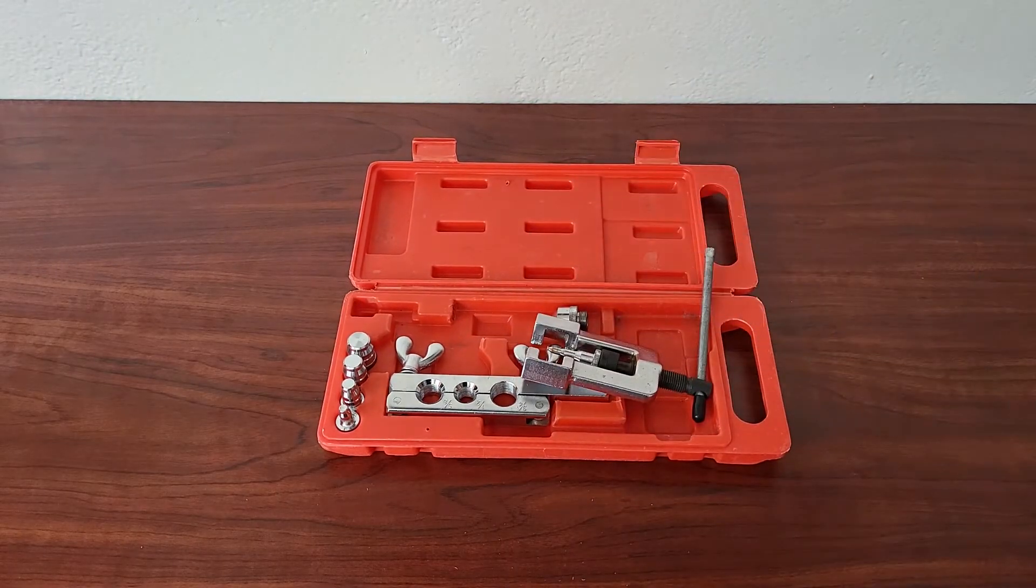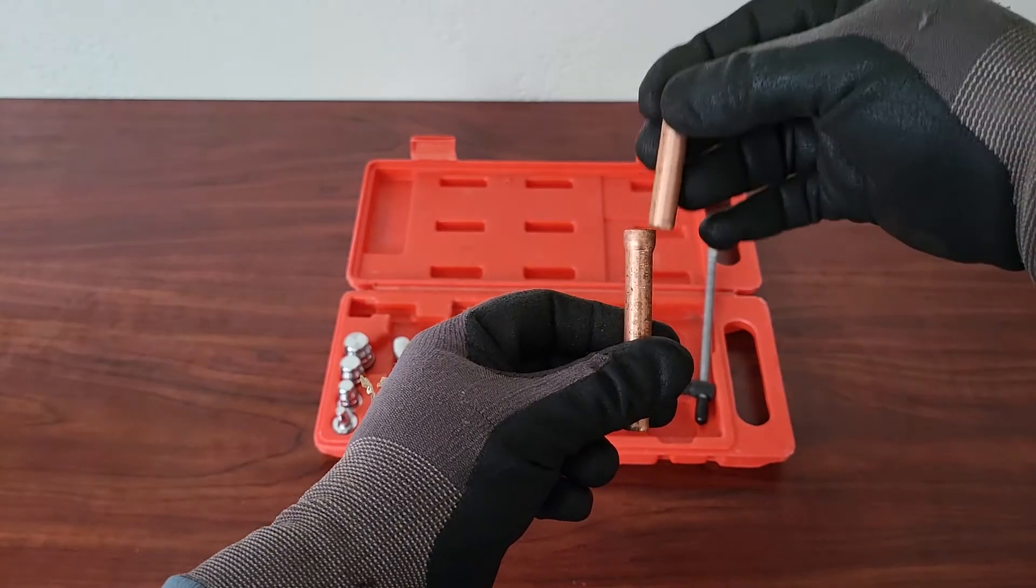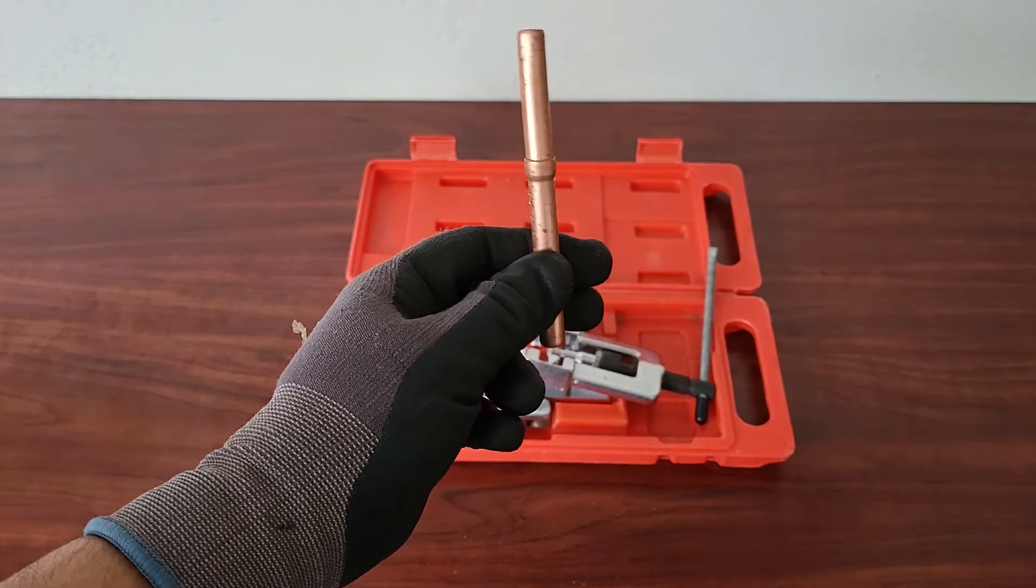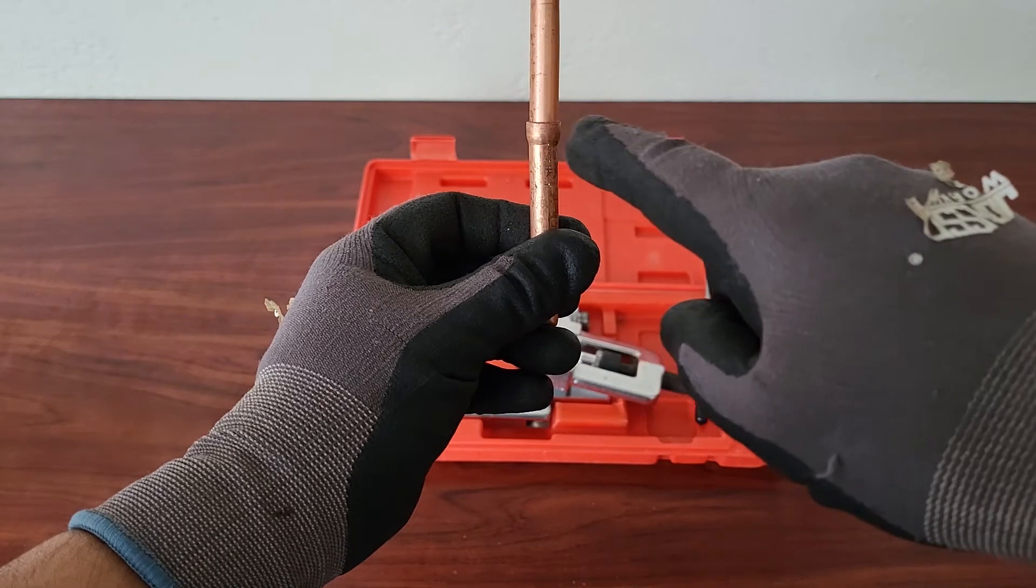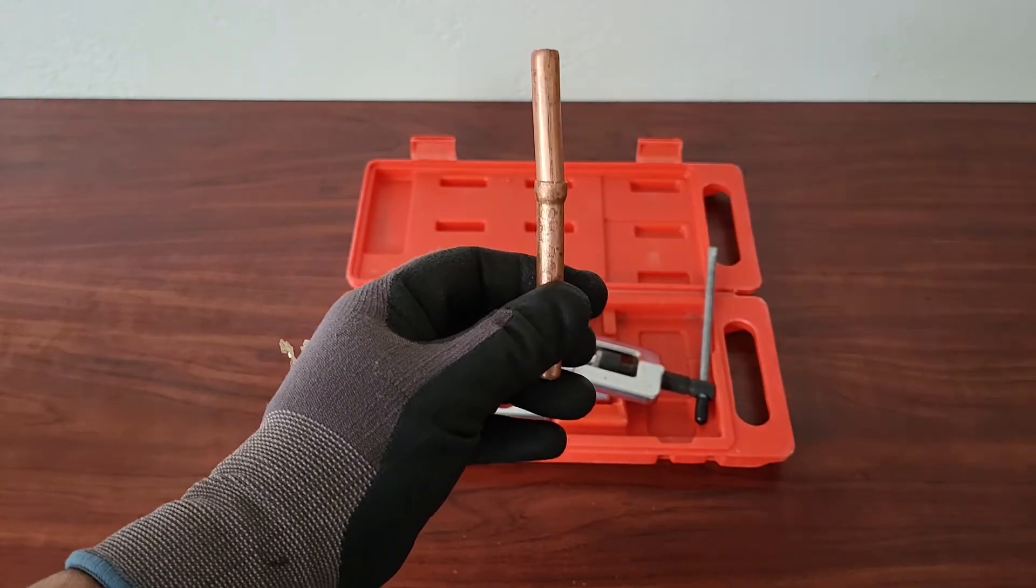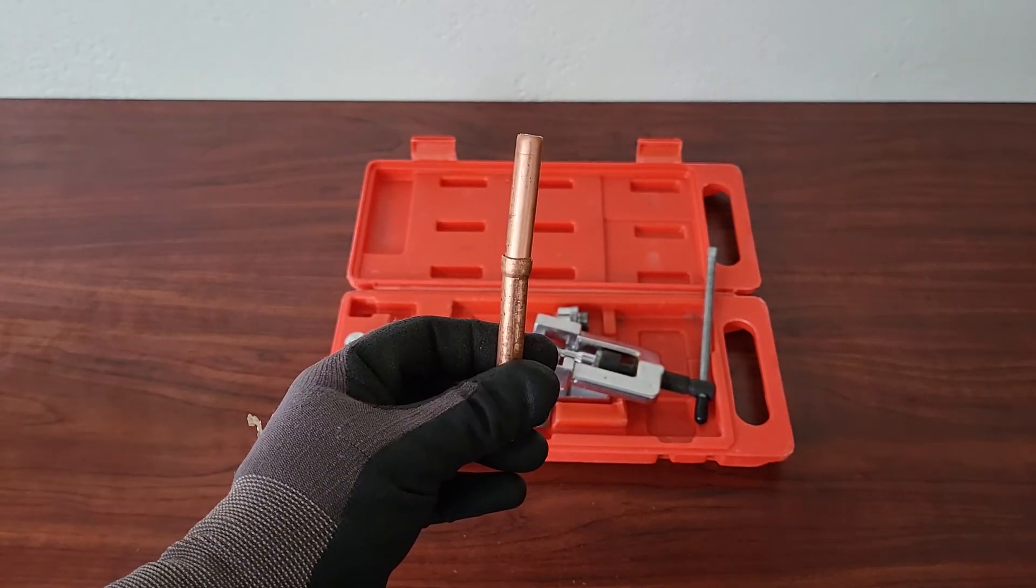And just to demonstrate that it is a decent swage, I've got the one pipe, and she fits neatly into the other, which means you are now going to be able to do your copper to copper braze right there. And that's it. That simple.